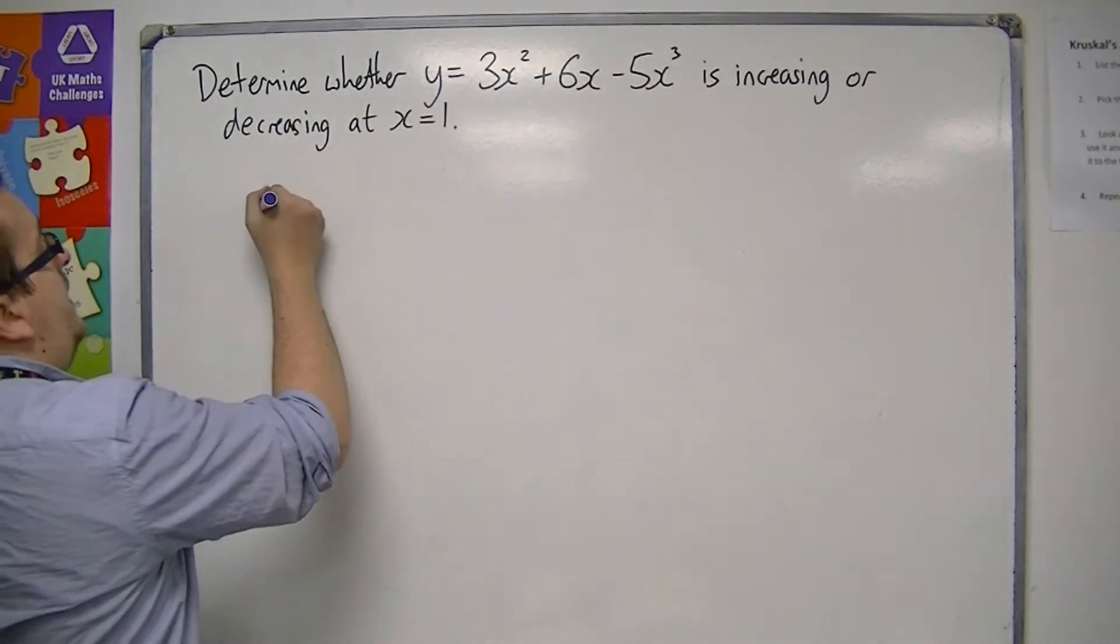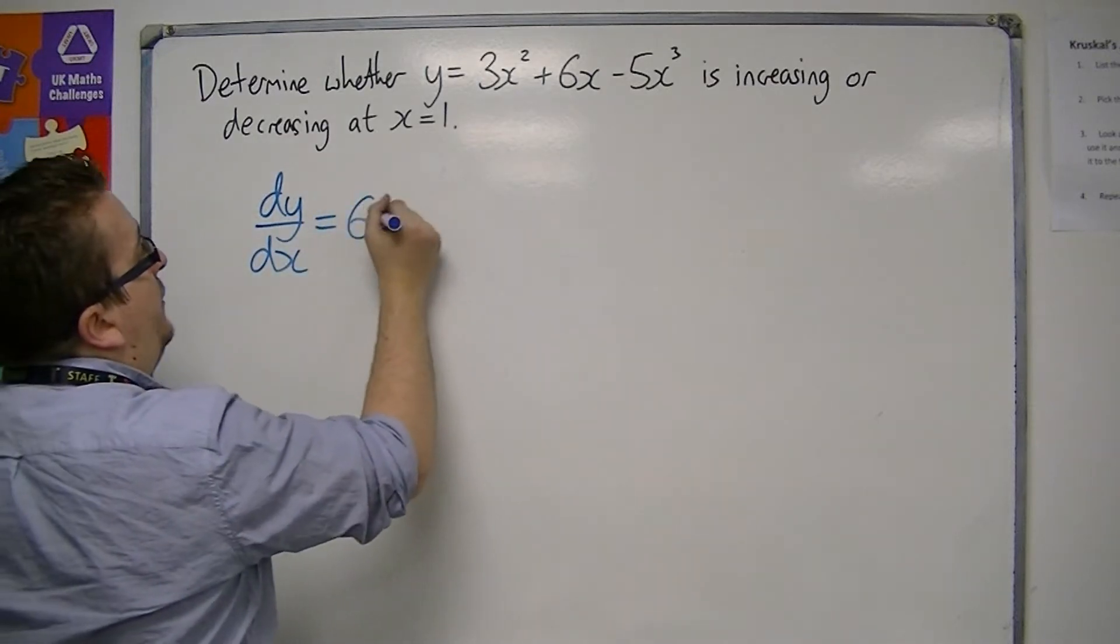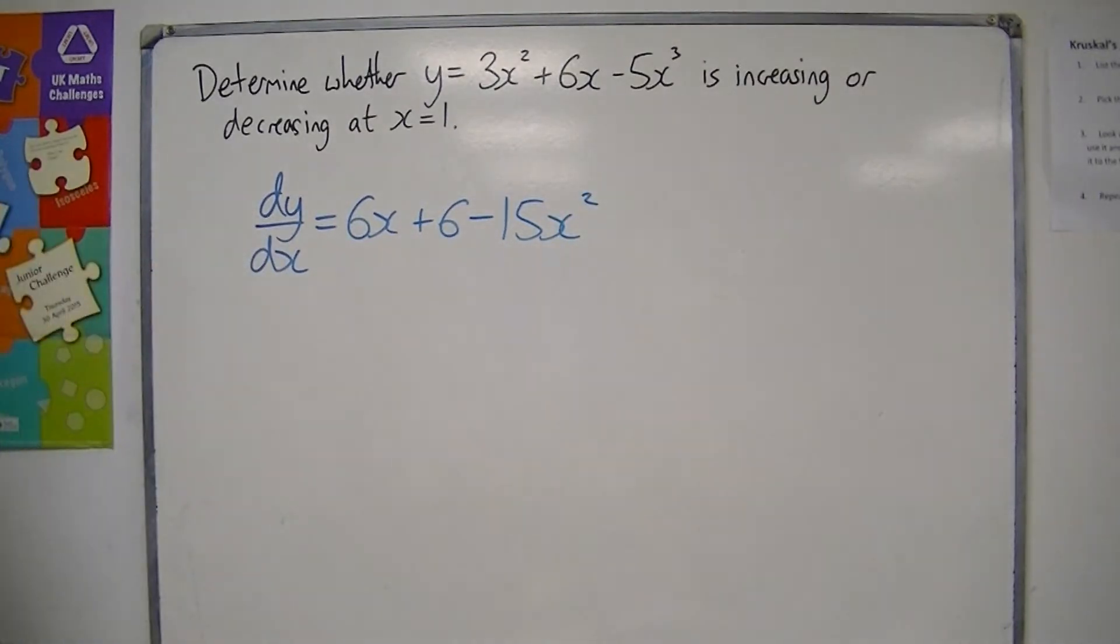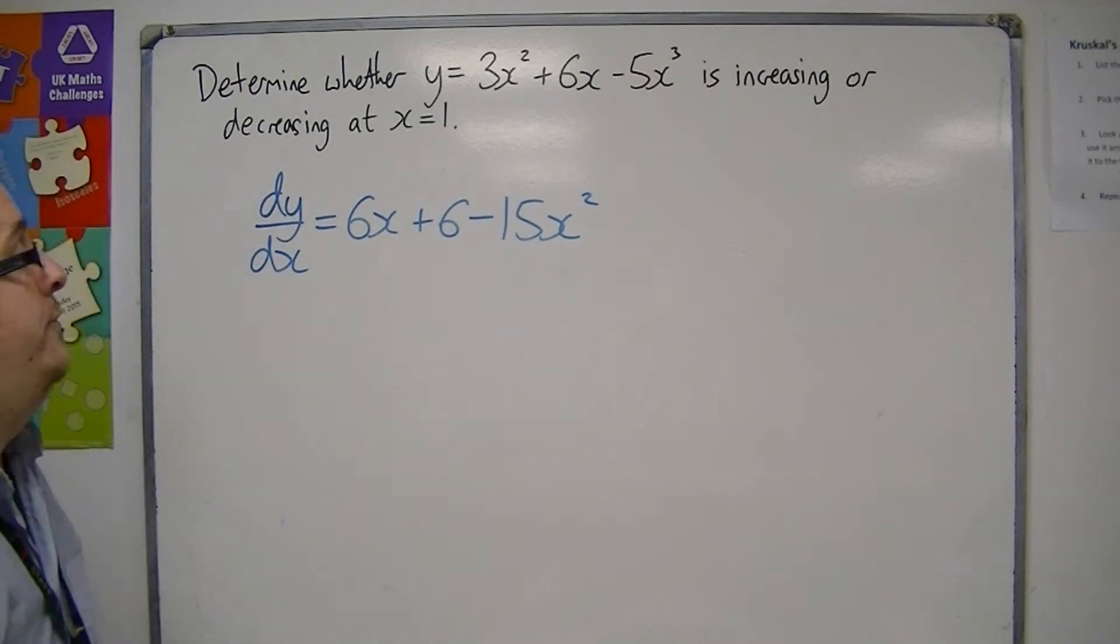So we differentiate it. dy by dx, and we get 6x plus 6, take away 15x squared. So the more of these you do, the quicker you will get at differentiating.